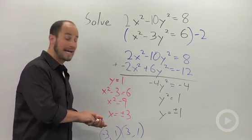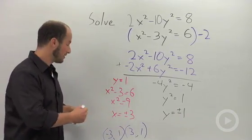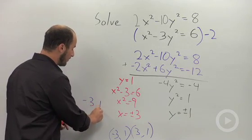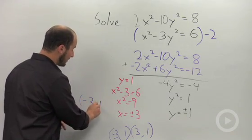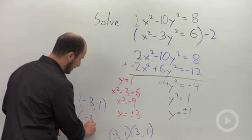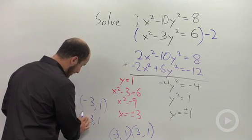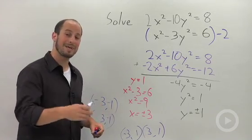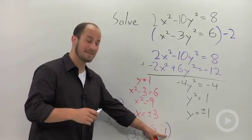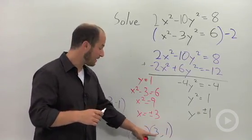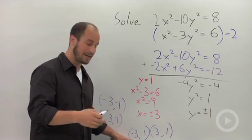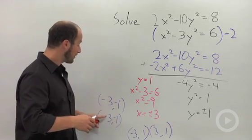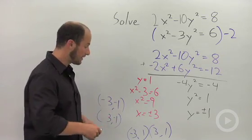So what that does is add two more answers to our solution set. We're ending up with 3 comma negative 1 or negative 3 comma negative 1. So we end up getting positive 1 for a y value being paired with positive or negative 3 for our x value or negative 1 for our y value being paired with positive 3 or negative 3 for our x value.